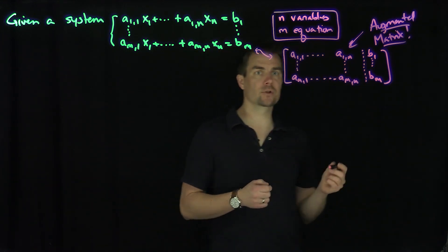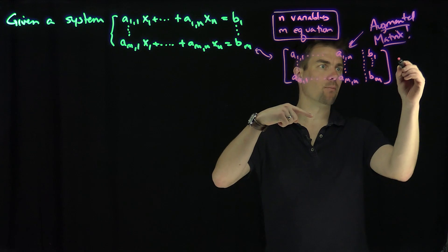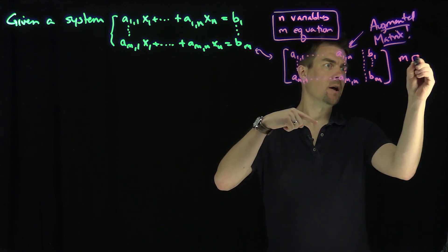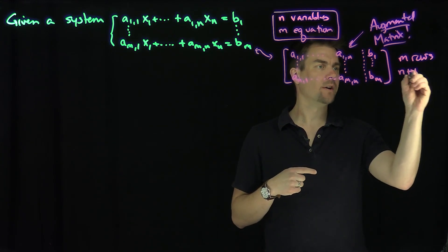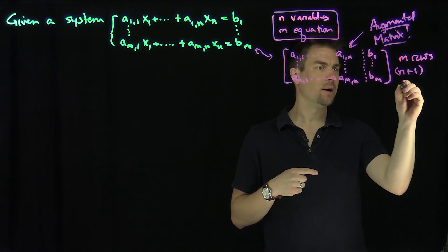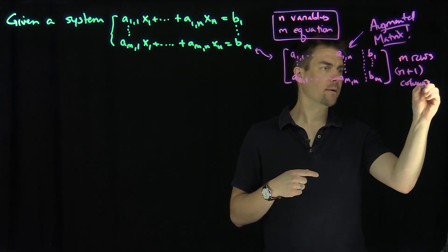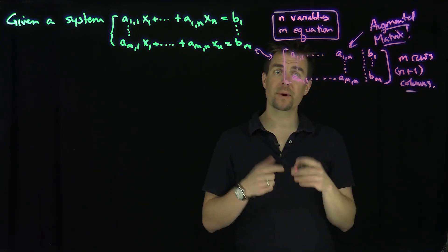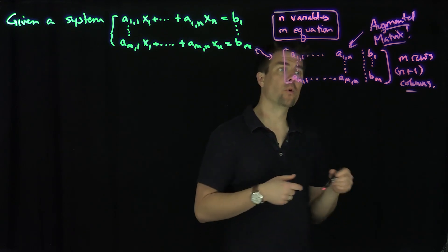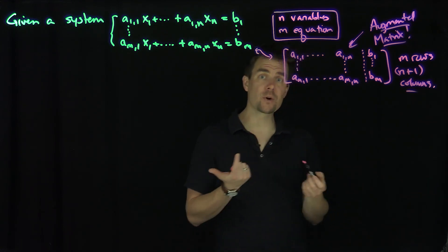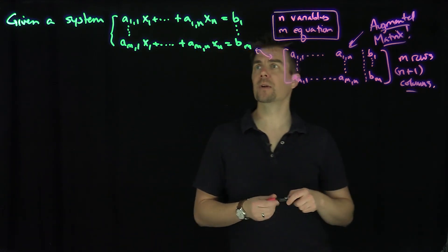This matrix has exactly m rows and n plus one columns, because the plus one corresponds to the right-hand side of the system. When all the b's are equal to zero, the system is called homogeneous.